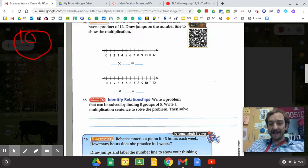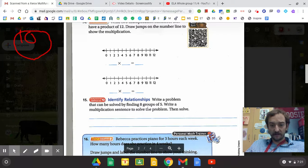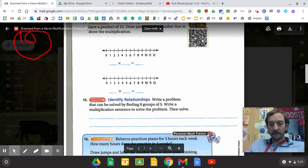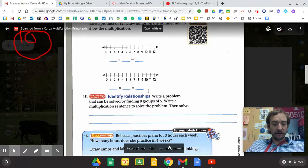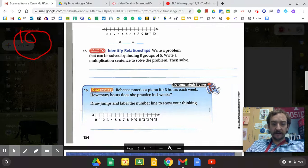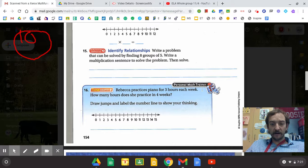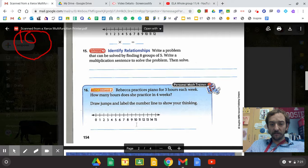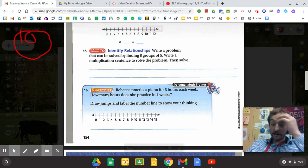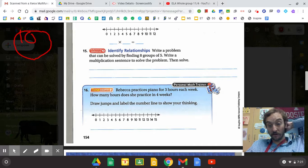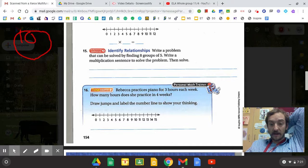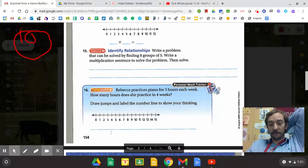Then you're going to write your own problem. Write a problem that can be solved finding eight groups of five. And you're going to find a multiplication problem. Write the multiplication problem to solve it. And then down here in 16, Rebecca practiced piano for three hours each week. How many hours does she practice in four? So how many groups? So your groups are four. Four groups because each week is a group. And then three hours in each. So you're going to do those jumps.